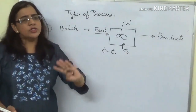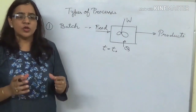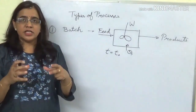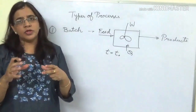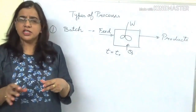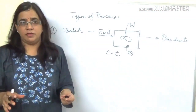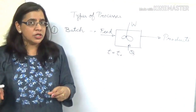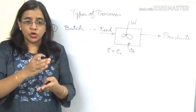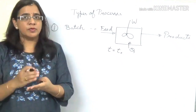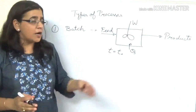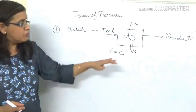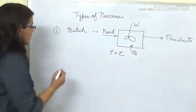Why do we use a batch process? Sometimes you have to produce chemicals in very small quantities which are very expensive, so you need maximum conversion and very tight control on the quality of the product. All these things are possible in a batch reactor, which is why the batch process is used.